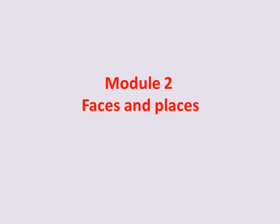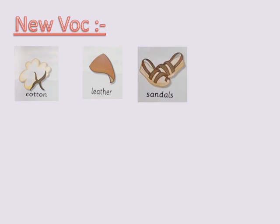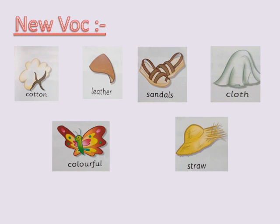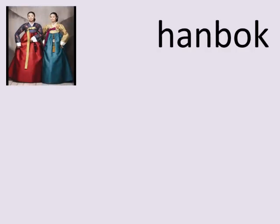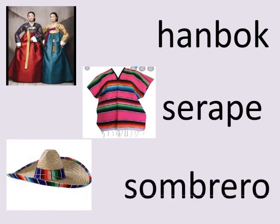Module 2: Faces and Places, Lesson 1: Guess. New vocabulary: bottle, leather, sandals, cloth, colorful, straw. A hanbok is a shirt and a very long skirt. A serapé is a colorful cloth worn over the body. A sombrero is a hat made of straw.